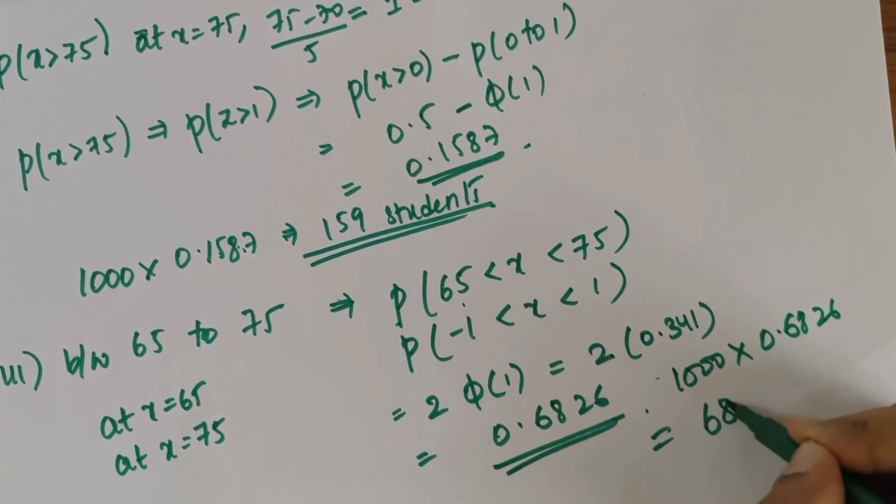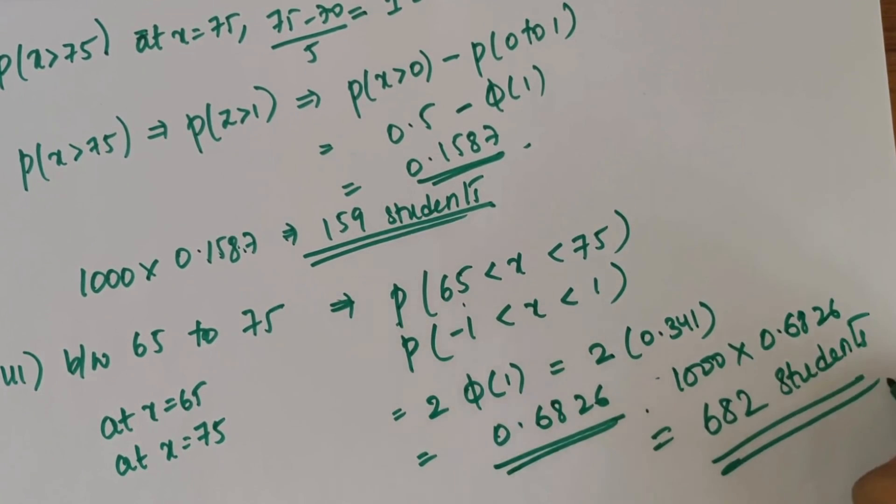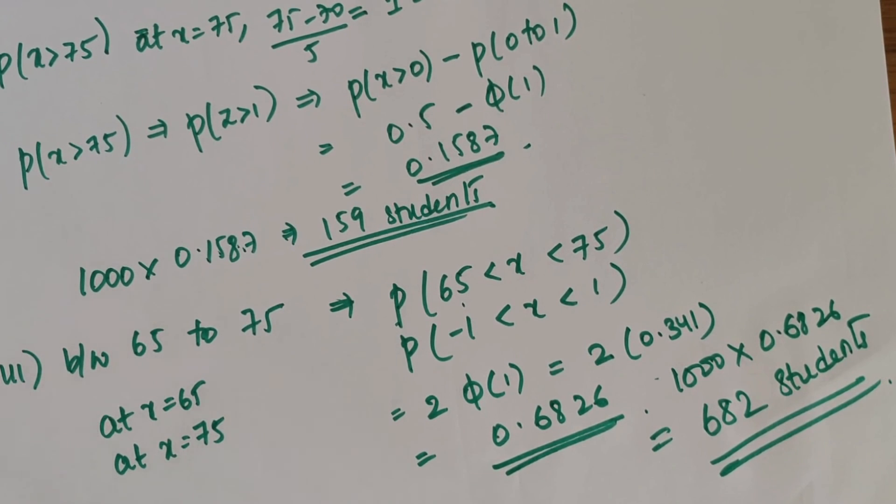Multiplying with 1000, you get 682 students who have scored between 65 and 75. I hope you have understood how to solve this question related to normal distribution. If you have any doubts, let me know in the comments and subscribe to my channel. Thank you.